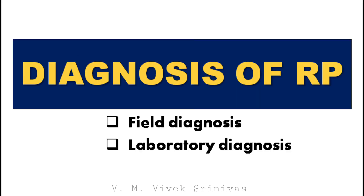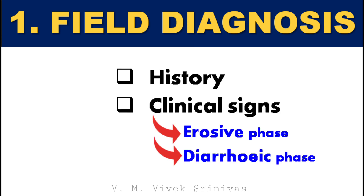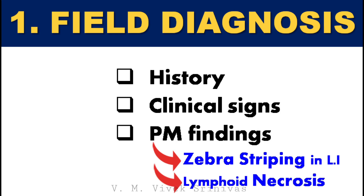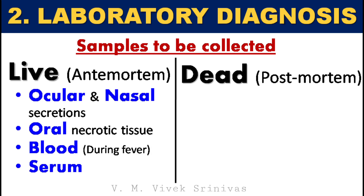Diagnosis can be done at field level or in laboratories. Field diagnosis is based on history, by signs and clinical symptoms observed in the erosive and diarrheic phases, and by post-mortem findings like zebra striping in the large intestine and necrosis of the lymphoid organs. For laboratory diagnosis, ocular and nasal secretions, necrotic tissue from the oral cavity, blood collected during fever, and serum are collected from live animals.